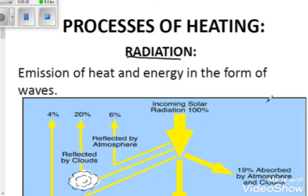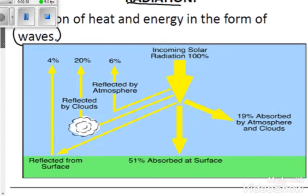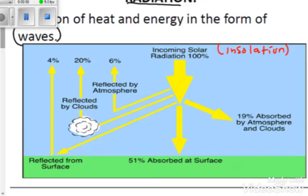The first process of heating is called radiation. Radiation is the emission of heat and energy in the form of waves. Heat waves from the Sun come with radiant energy to the earth. You can see this diagram that illustrates how this all happens — first, we have incoming solar radiation, also called insolation.